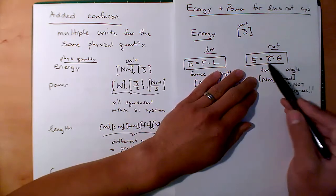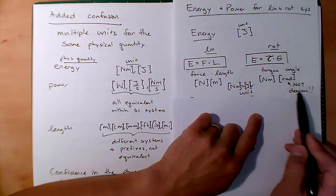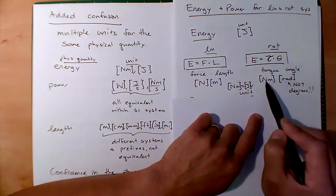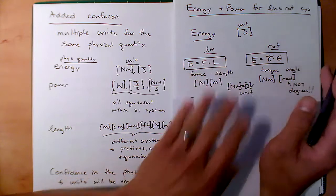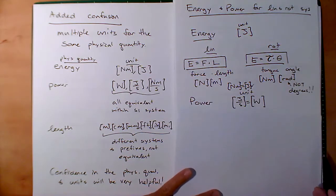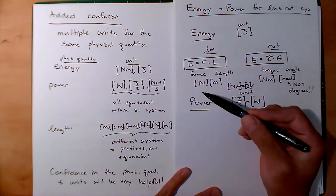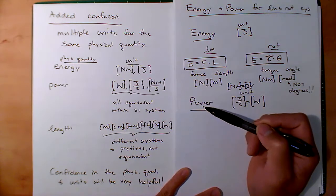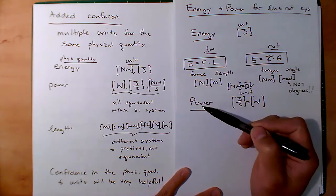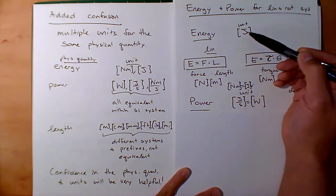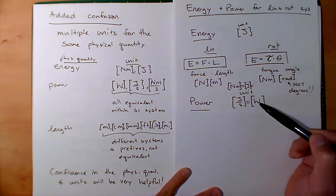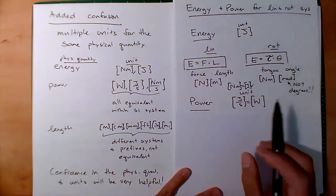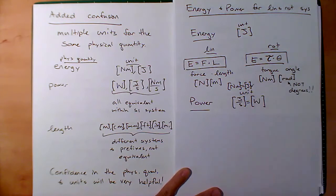For the rotational version: a radian is technically unitless, and torque is a Newton-meter. So we have Newton-meters times (unitless radians), giving Newton-meters — consistent with joules. Power is the time derivative, or time rate of change, of energy. If energy is money, power is how fast you spend that money. Power in joules per second gives us watts as our equivalent unit. You fundamentally need to know the difference between energy and power.